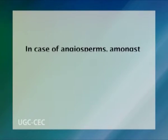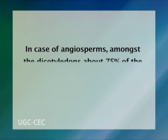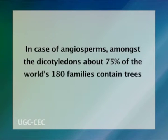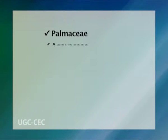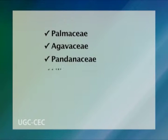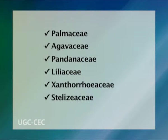In case of angiosperms, among the dicotyledons, about 75% of the world's almost 180 families contain trees. In contrast, in monocotyledons, a wide-ranging set of trees are concentrated in just a few families such as Palmaceae, Agavaceae, Pandanaceae, Liliaceae, Xanthorrhoeaceae and Strelitziaceae.